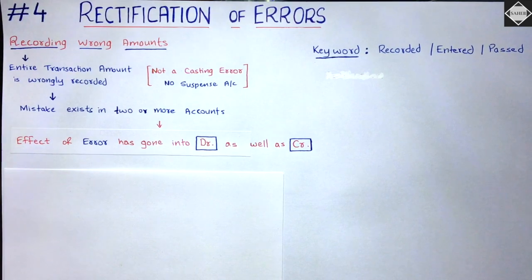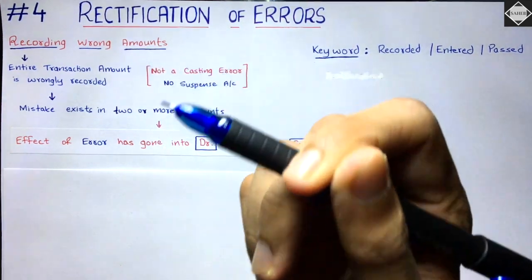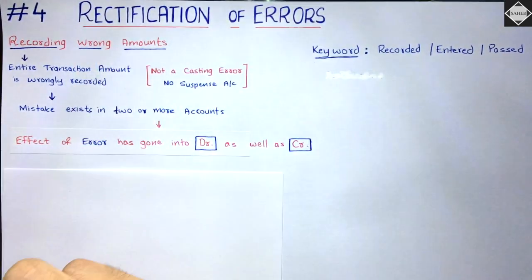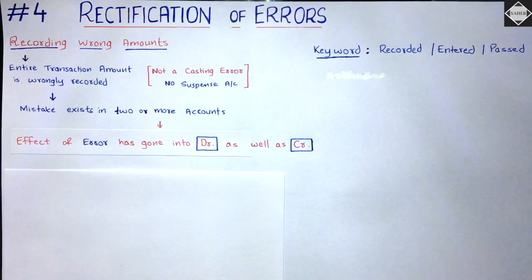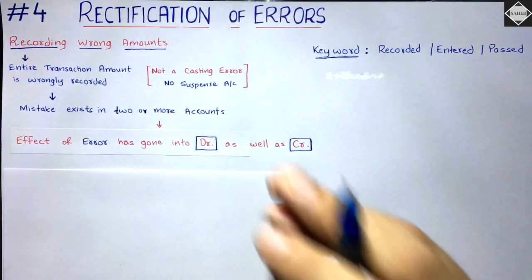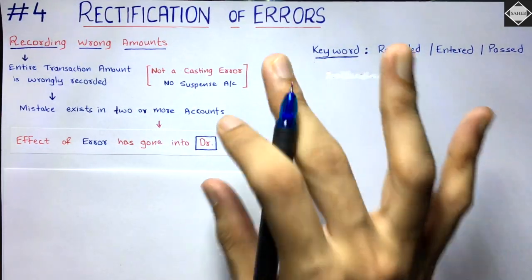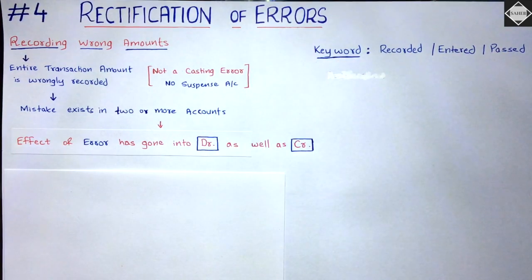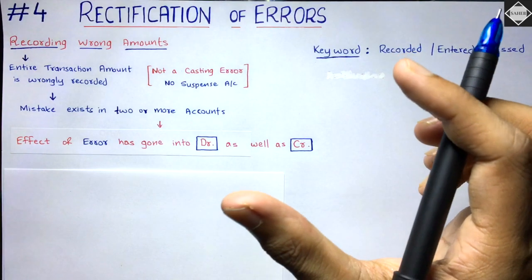Hi everyone, welcome back to Sahab Academy. Today in this fourth video of the Rectification of Errors chapter, we are going to talk about errors that happen when we record the transaction entirely with the wrong amounts. We have to understand this error properly, otherwise you will not be able to rectify it — you might think these are casting errors and completely mess up.